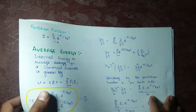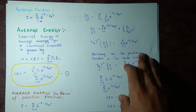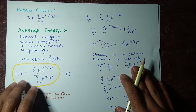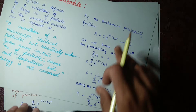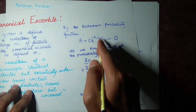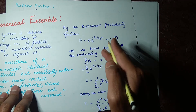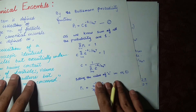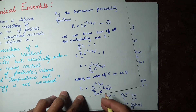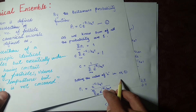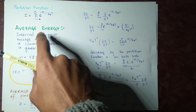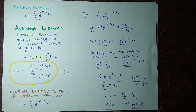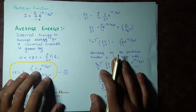Assalamu alaikum dear students, welcome back to Learning Daily Physics. Today we are going to find average energy by using the partition function. Previously, in our last lecture, we talked about canonical ensemble and derived the probability density. We discussed what the partition function is. Now we are going to find the average energy using this partition function, and after that we will find entropy, Helmholtz energy, and other state functions.